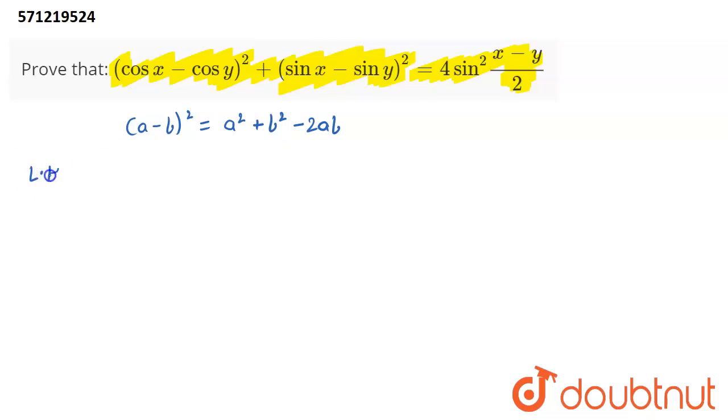Now, I am writing down the left hand side. It is (cos x - cos y)² + (sin x - sin y)². I am going to use this formula for expansion of these terms. Since here in this bracket, you can observe that cos x is my a and my b is cos y, it becomes cos²x, that is a² plus b², that is cos²y minus twice a into b, that is cos x cos y.